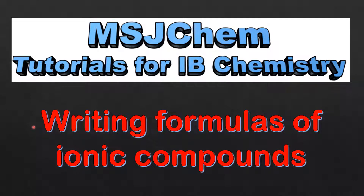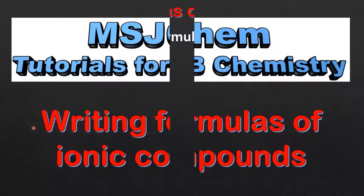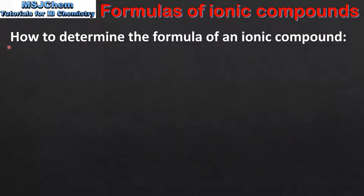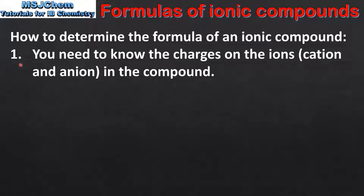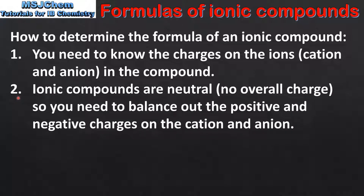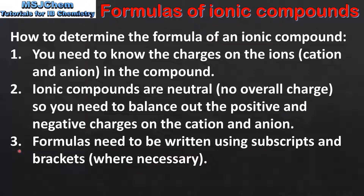This is MSJChem. In this video I'll be looking at writing formulas of ionic compounds. First you need to know the charges on the ions — that's the cation and anion in the compound. The second point is that ionic compounds are neutral, which means they have no overall charge, so you need to balance out the positive and negative charges on the cation and anion. And thirdly, formulas need to be written using subscripts and brackets where necessary.